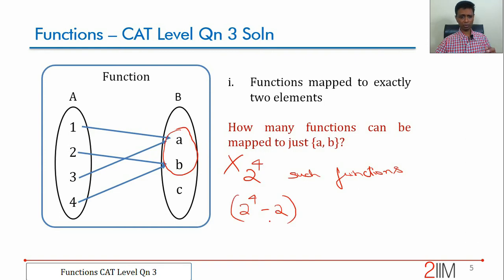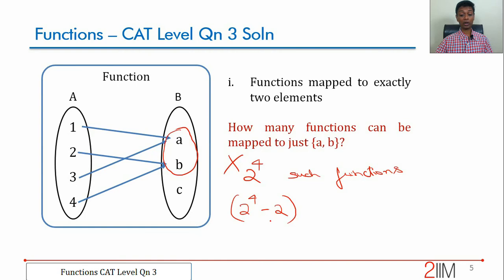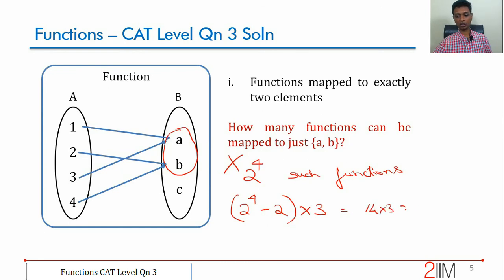So functions mapped to only {a,b} = 2⁴ - 2 = 14. Similarly, functions mapped to only {b,c} = 14, and only {c,a} = 14. That gives 14 × 3 = 42 functions mapped to exactly two elements.